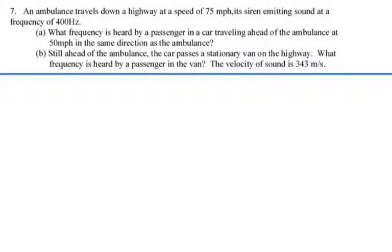Here's sample test problem number seven. An ambulance travels down the highway at a speed of 75 miles per hour, its siren emitting sound at a frequency of 400 hertz. What frequency is heard by a passenger in a car traveling ahead of the ambulance at 50 miles per hour in the same direction as the ambulance?